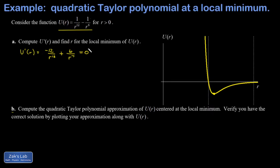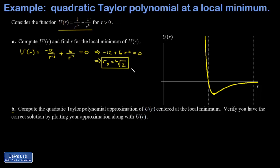To find the local minimum we set u'(r) equal to zero. Multiplying both sides by r^13 gives −12 + 6r^6 = 0. Adding 12 to both sides, dividing by 6, and taking the sixth root of both sides, we find that r₀, the location of the local minimum, is the sixth root of 2.